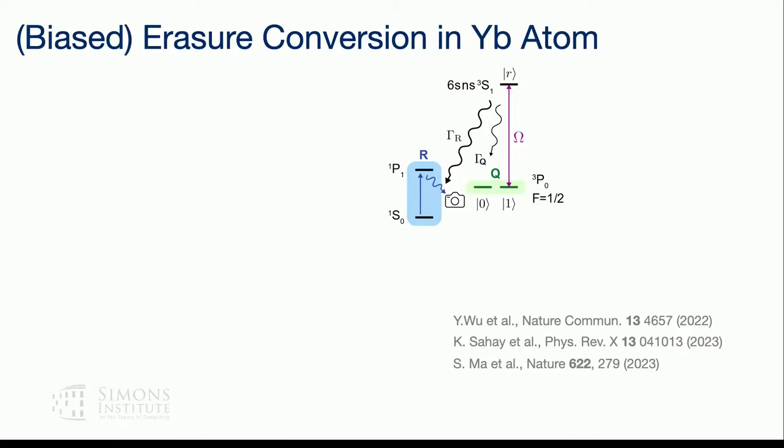When the atom is in the metastable state, the atoms don't really interact. So when I want two atoms to interact, I need to excite them into the Rydberg state. We excite the one-state to the Rydberg state to do gates. The Rydberg state has a wide wavefunction, so atoms can interact with each other to perform Rydberg blockade gates.